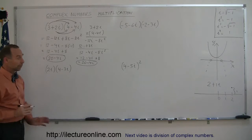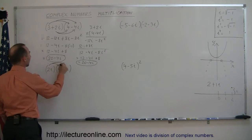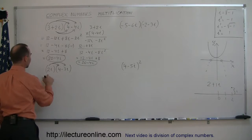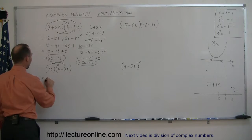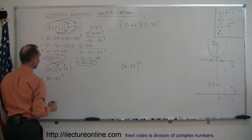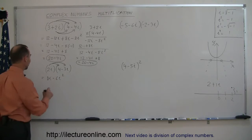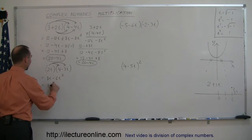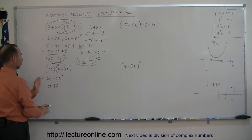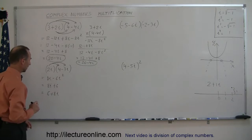Going to our second example — that's actually a little bit simpler because we only have one term in the first number, so we multiply it with each term in the second number. This is equal to 2i times 4, which is 8i, and 2i times negative 3i is negative 6i squared. Remember i squared is negative 1, so negative 1 times 6 becomes plus 6, giving 8i plus 6. Traditionally you write the real part first, so this is equal to 6 plus 8i.